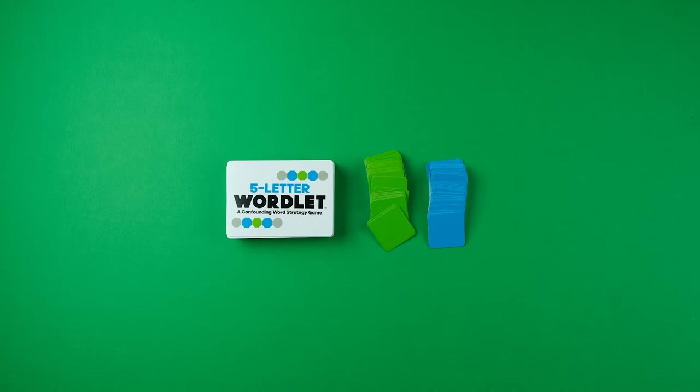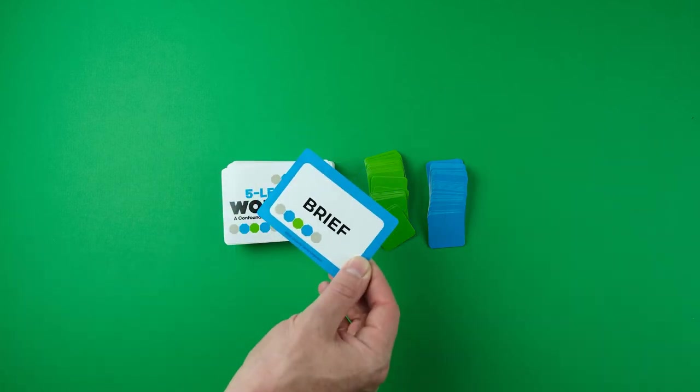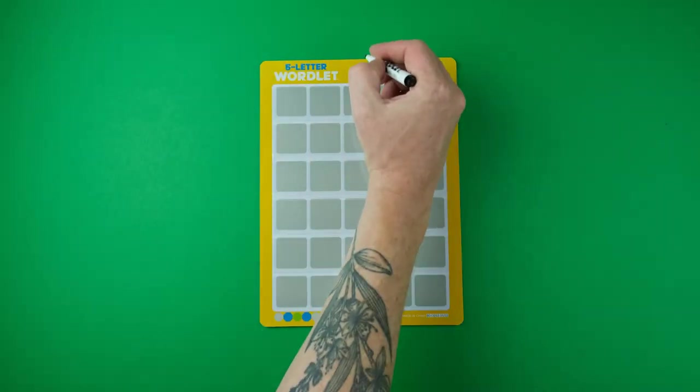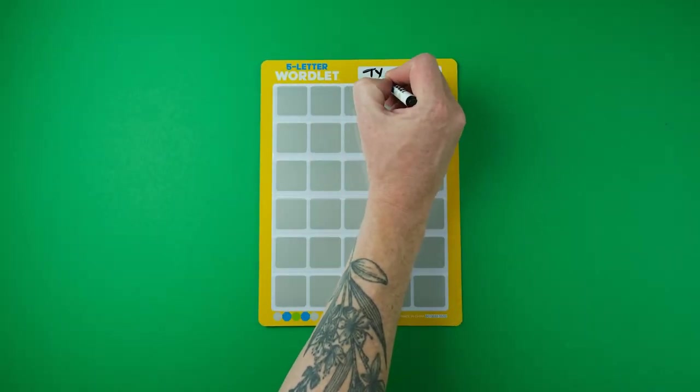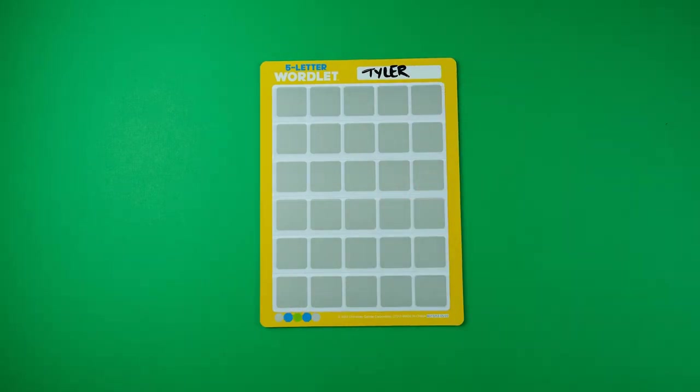The youngest player begins the game as the word master and selects a word card from the top of the deck. This will be the secret word for the round. All other players begin the game as word guessers, taking a guessing board and a dry erase marker and writing their names in the space provided at the top of the board.